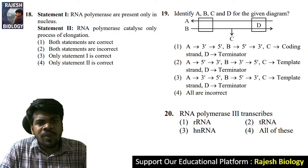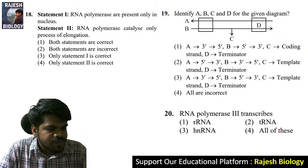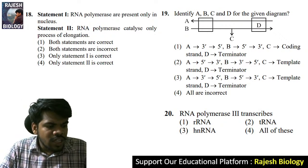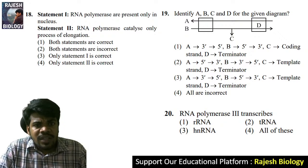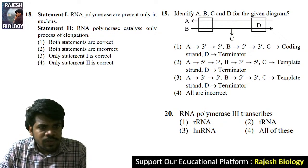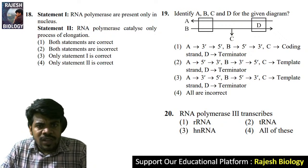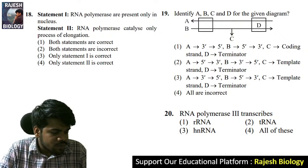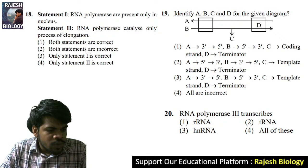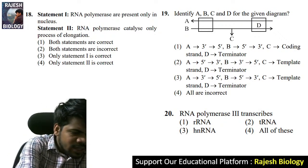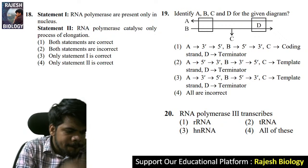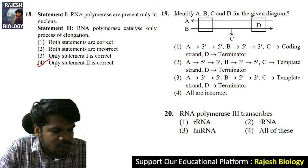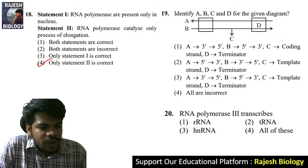Question 18: statement one — RNA polymerases are present only in the nucleus. Is this correct? Statement two — RNA polymerase catalyzes only the process of elongation. The right answer: only statement two is correct. Dinesh, very good.